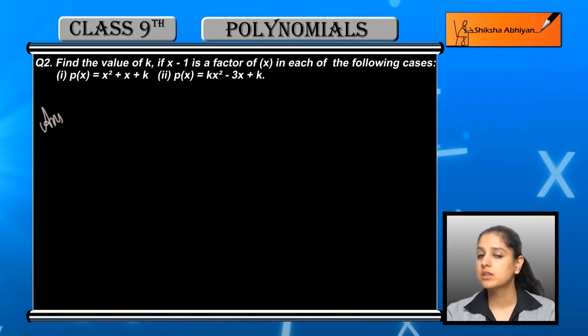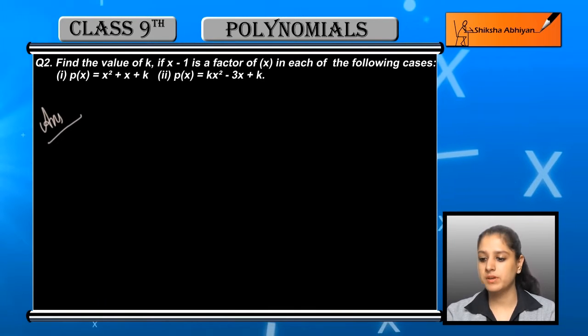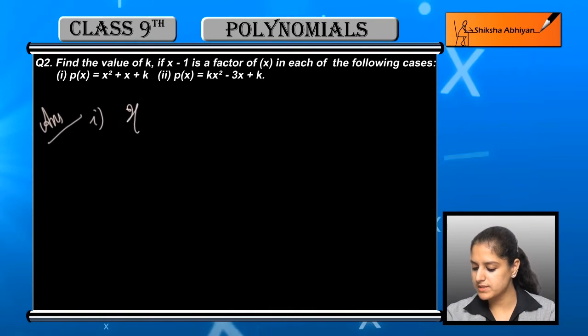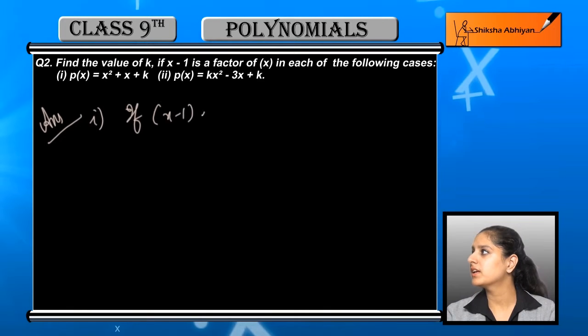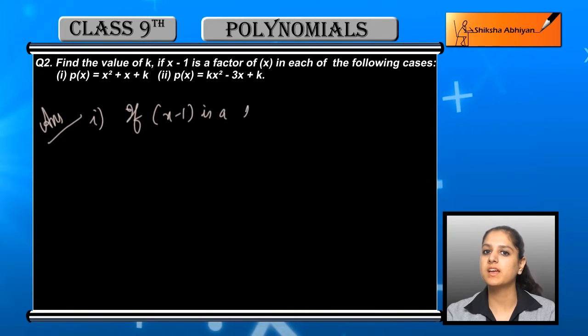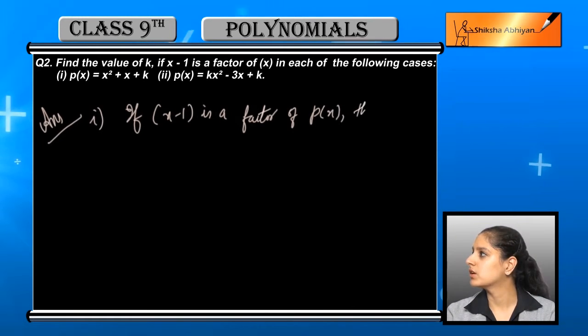First, the polynomial given is x² + x + k. We need to check if x minus 1 is its factor. Since x minus 1 is given as a factor, we need to find p(1).